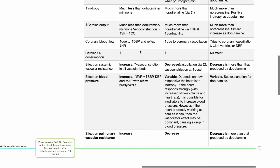Regarding effect on blood pressure: noradrenaline increases blood pressure via increased SVR, raising systolic blood pressure, diastolic blood pressure, and MAP, with accompanying reflex bradycardia. The effects on blood pressure of dobutamine and milrinone are variable and depend on how responsive the heart is to inotropy. If the heart responds strongly with increased stroke volume and heart rate, inodilators can increase blood pressure. However, if the heart is already working as hard as it can, the vasodilatory effect may be dominant, causing a drop in blood pressure.